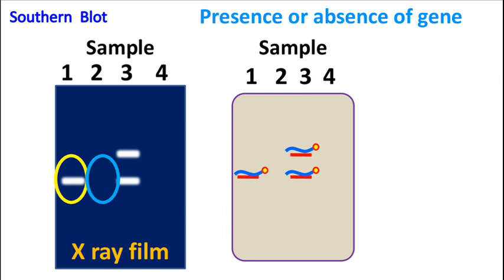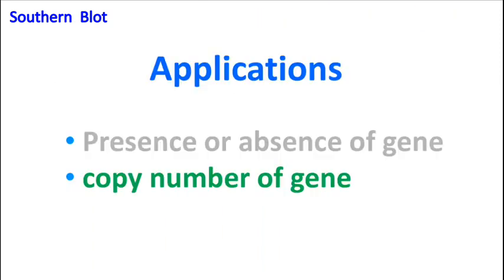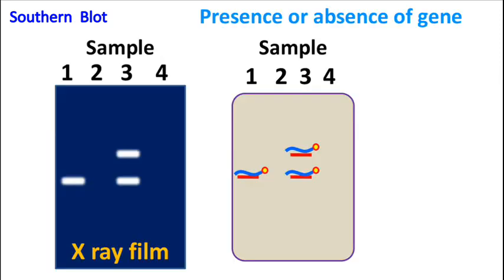Besides presence and absence of gene, we can also detect copy number of genes. In this example, let's say sample 3 has two bands. This indicates that there are two copies of the gene in this genome.